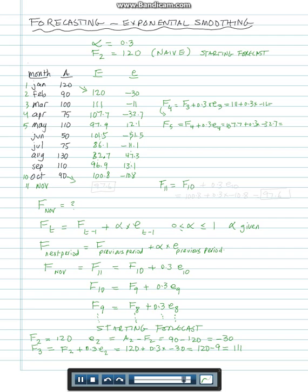When we get to the very last one, we can calculate f11. F11 is f10 plus 0.3 times e10, so f10 is 100.8 plus 0.3 times negative 10.8, and that gives you 97.6. So your forecast for November is 97.6 using exponential smoothing. And that's what I meant by a lot of calculations to get only to November.